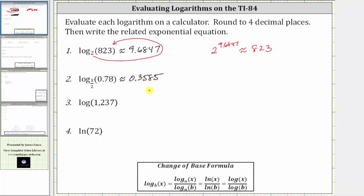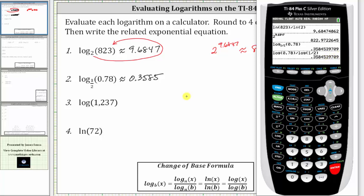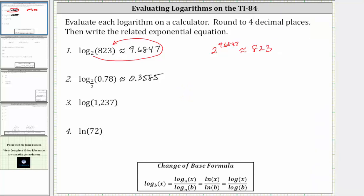Let's verify this using the change of base formula, this time using common log. Therefore, log base one-half of 0.78 is equal to common log 0.78 close parenthesis divided by common log one-half. And of course we do get the same result.